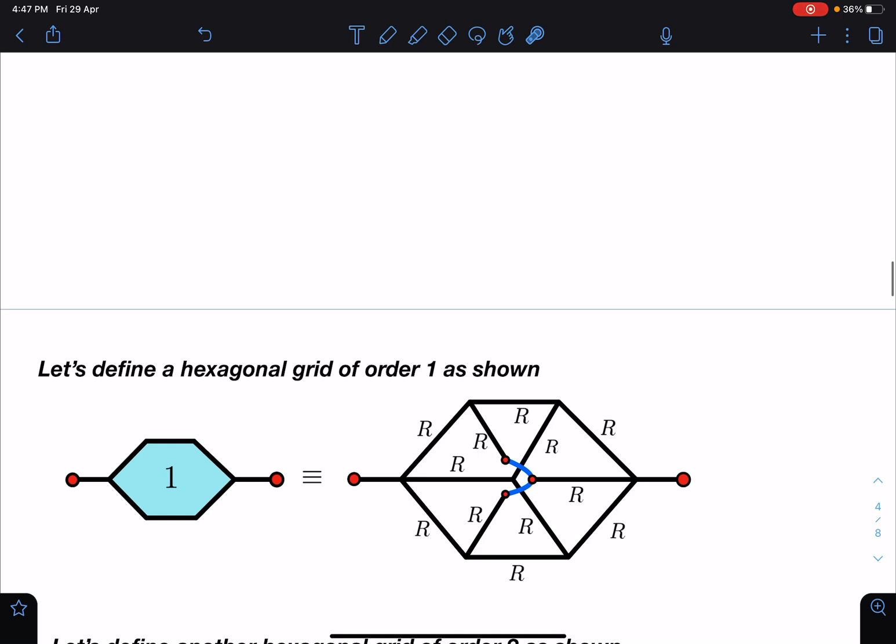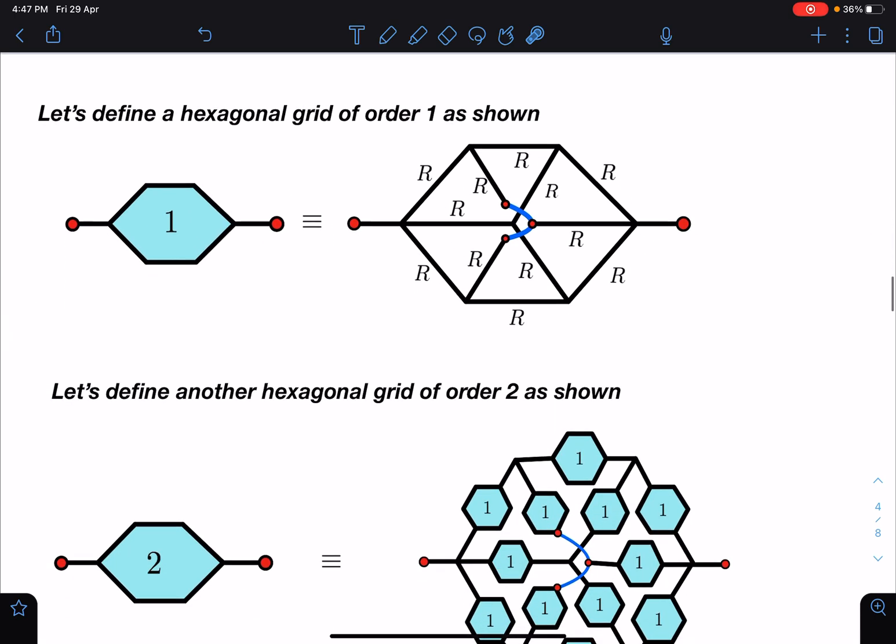So let's discuss the problem statement. Here it is - we are defining a hexagonal grid, so this is a box kind of thing and inside this box if you see, this type of arrangement is given. After this what we do is we are defining another hexagonal grid.